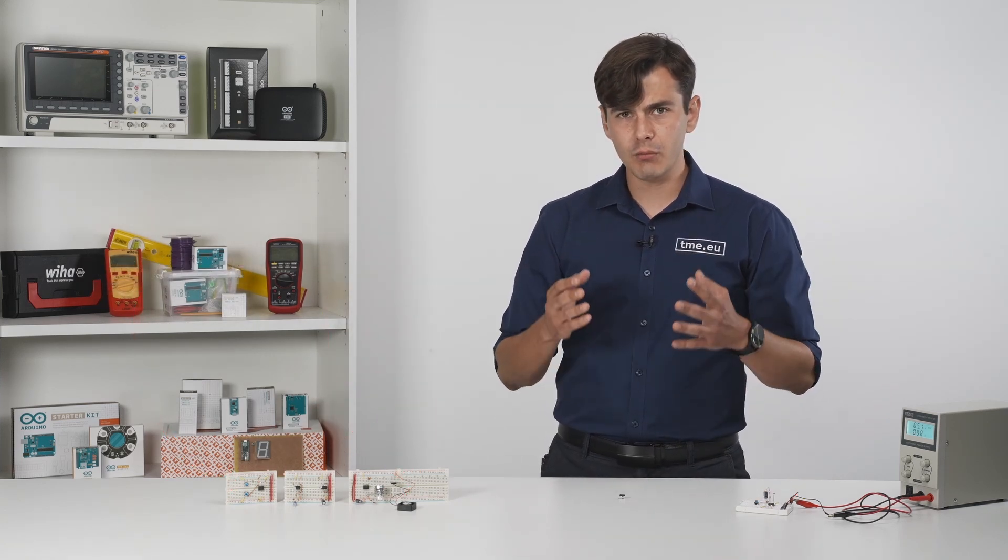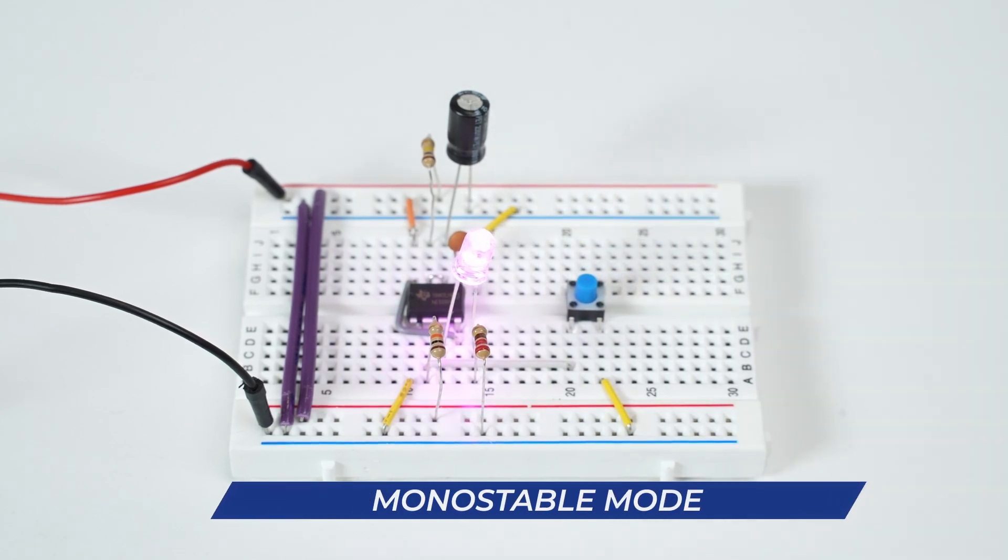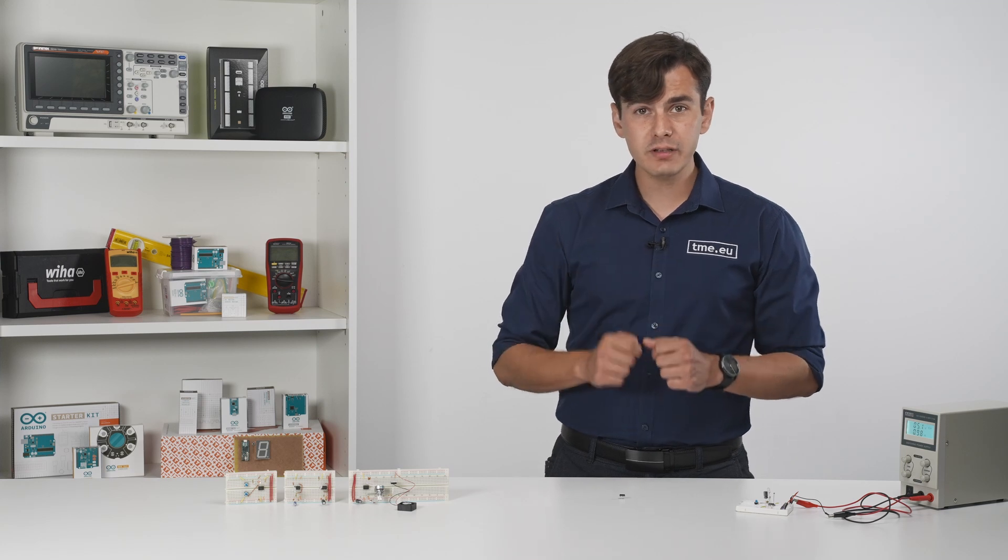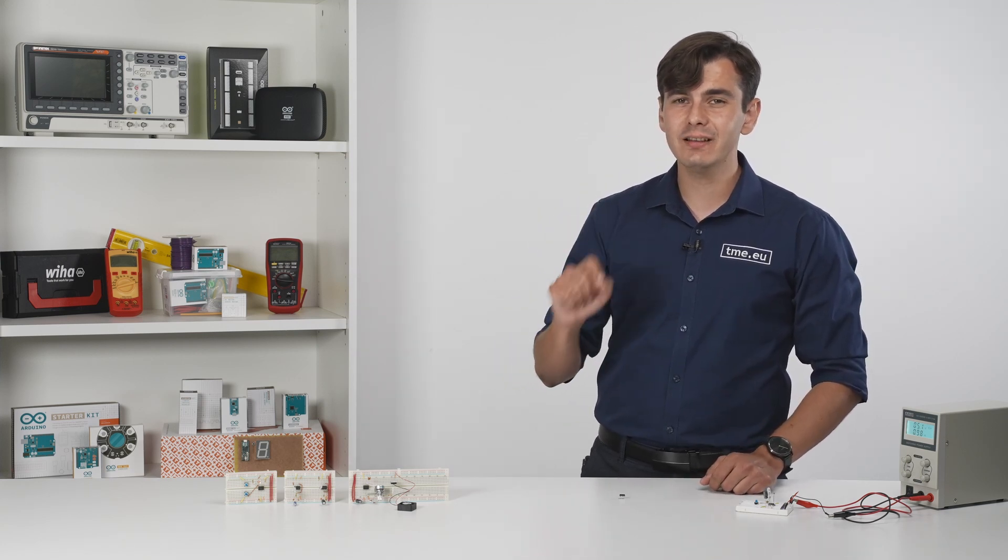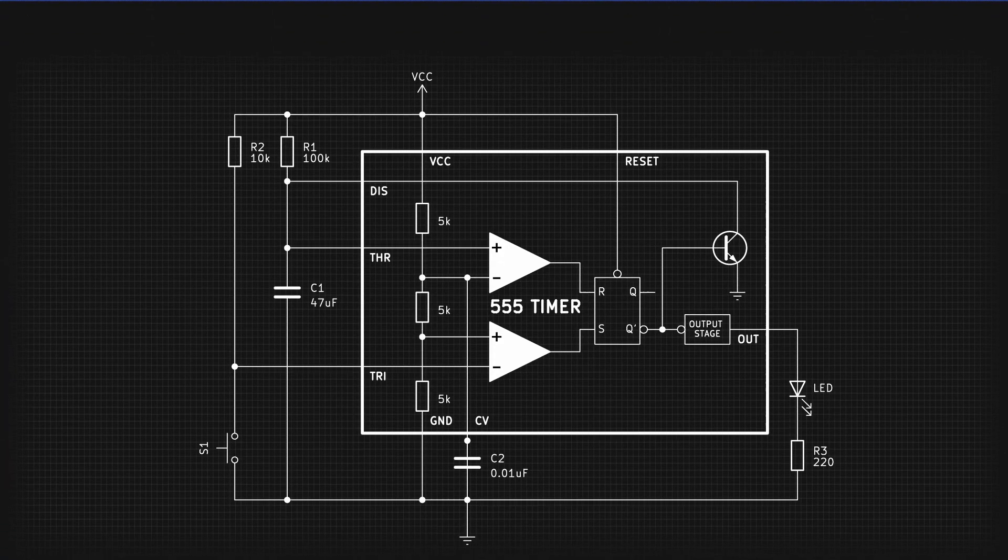When the 555 is in monostable mode, it creates a stable temporary output. It can be used to make delay circuits. But how can this chip count the exact delay time? To understand that, we need to draw a little schematic. From the beginning, capacitor C1 is discharged.